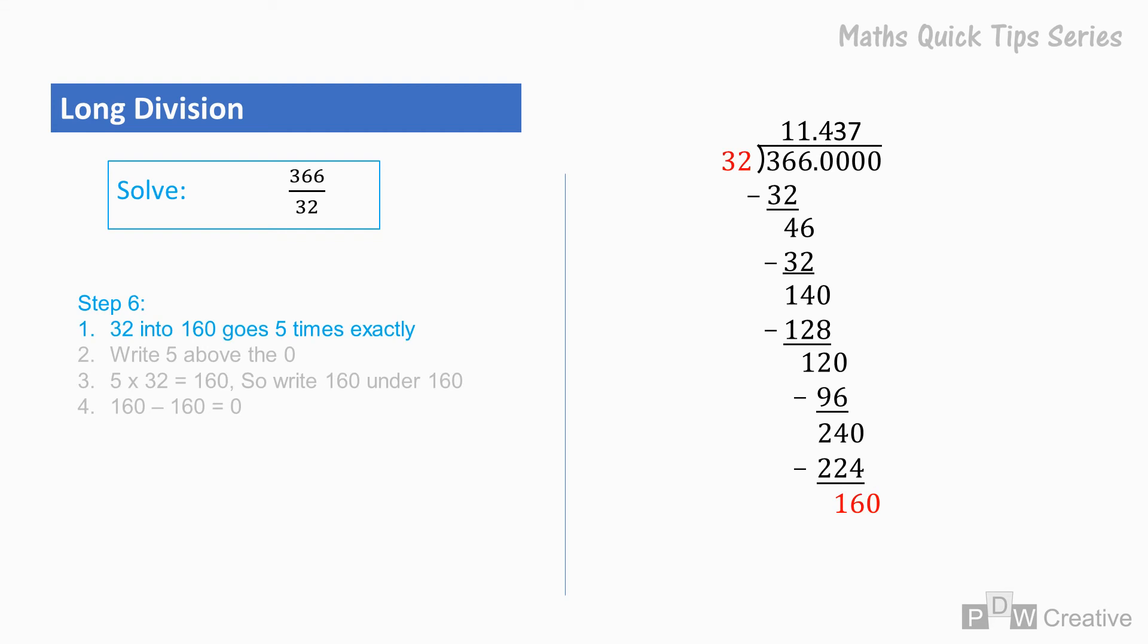32 into 160 goes 5 times exactly. So we can write 5 above the final 0. 5 times 32 equals 160. So write 160 under 160.